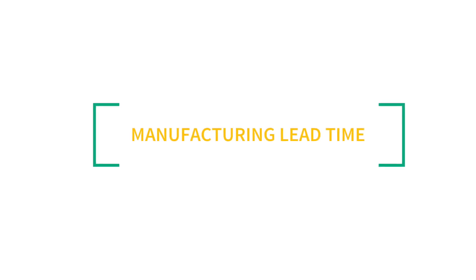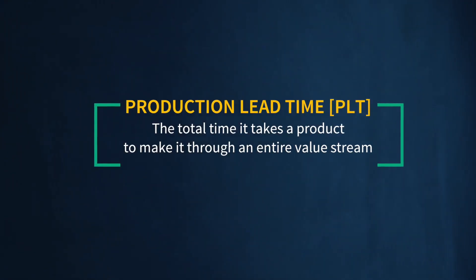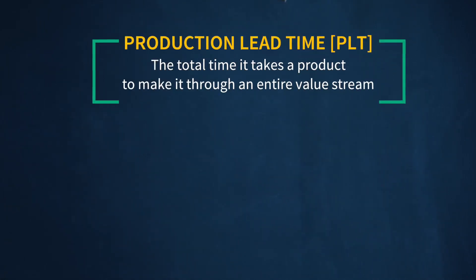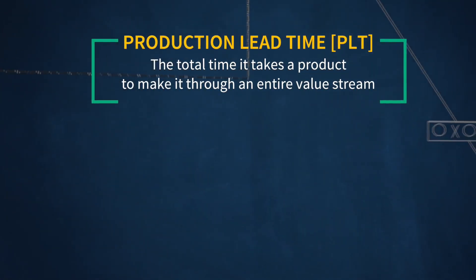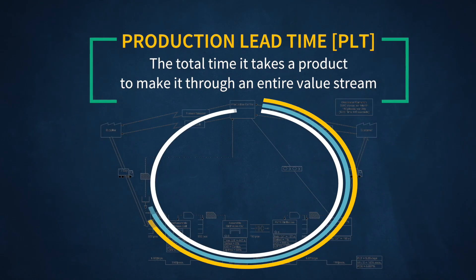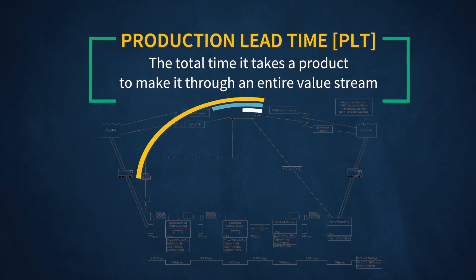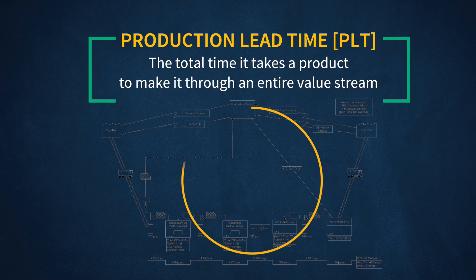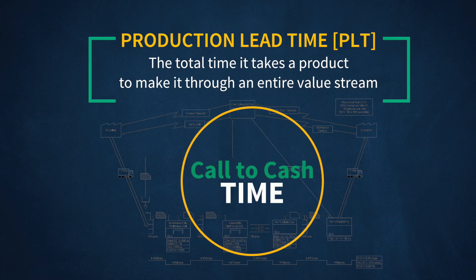Next, let's discuss manufacturing lead time, which we actually prefer to call production lead time, or PLT for short. The production lead time represents the total time — value added and non-value added — it takes a product to make it through an entire value stream. This is often called the call-to-cash time, since it helps us understand the time between taking the order and receiving payment for the delivered goods or services.